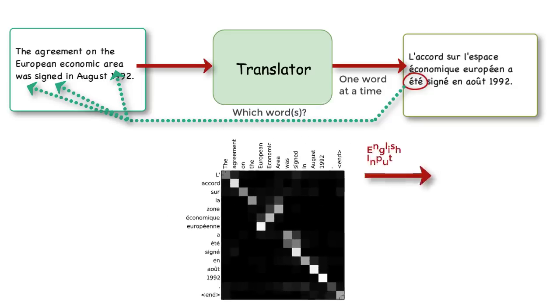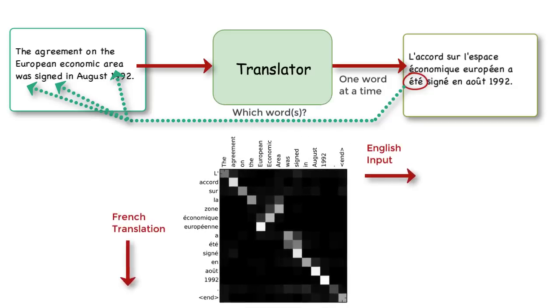So, given the English sentence and its French translation, our translator will try to align them. In this example, été is lined up with the English words was and signed. Really white means super aligned or more attention is focused on that English word while generating the French word.